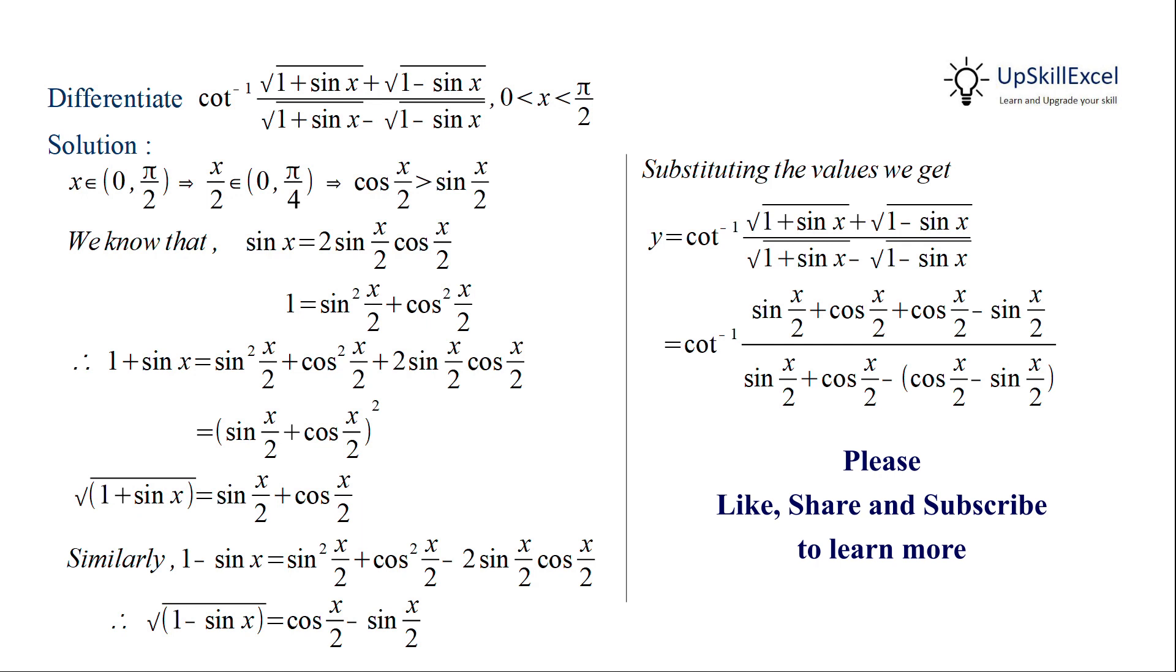In the numerator, sin x by 2 gets cancelled out, and in the denominator, cos x by 2 gets cancelled out, leaving us with 2 cos x by 2 divided by 2 sin x by 2, and this can be simplified to cot inverse of cot x by 2.